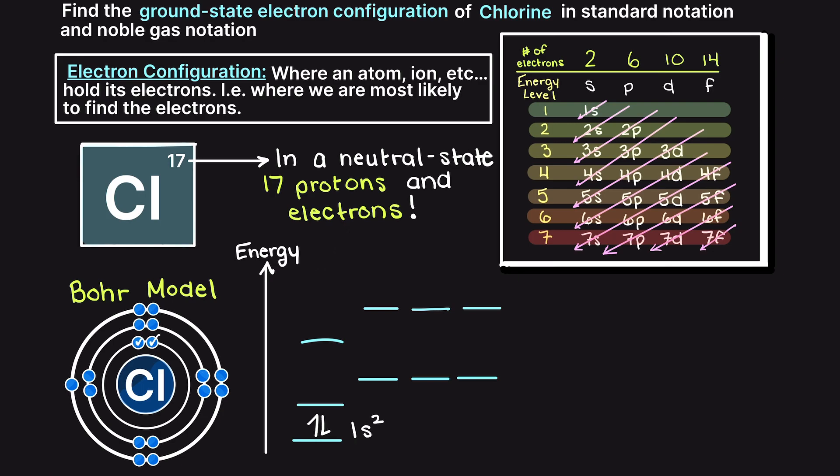Next, moving our arrows we have 2s, which again can take 2 electrons. We have a 2p subshell, and the 2p subshell can hold 6 electrons, therefore we're left with 7 remaining electrons.